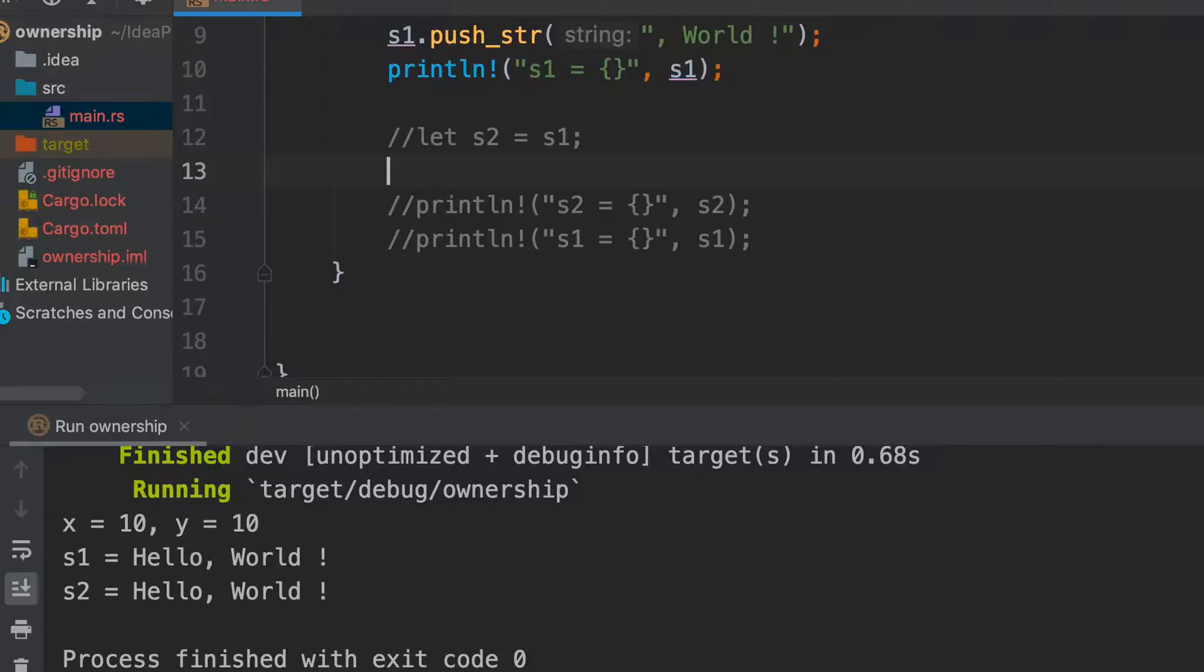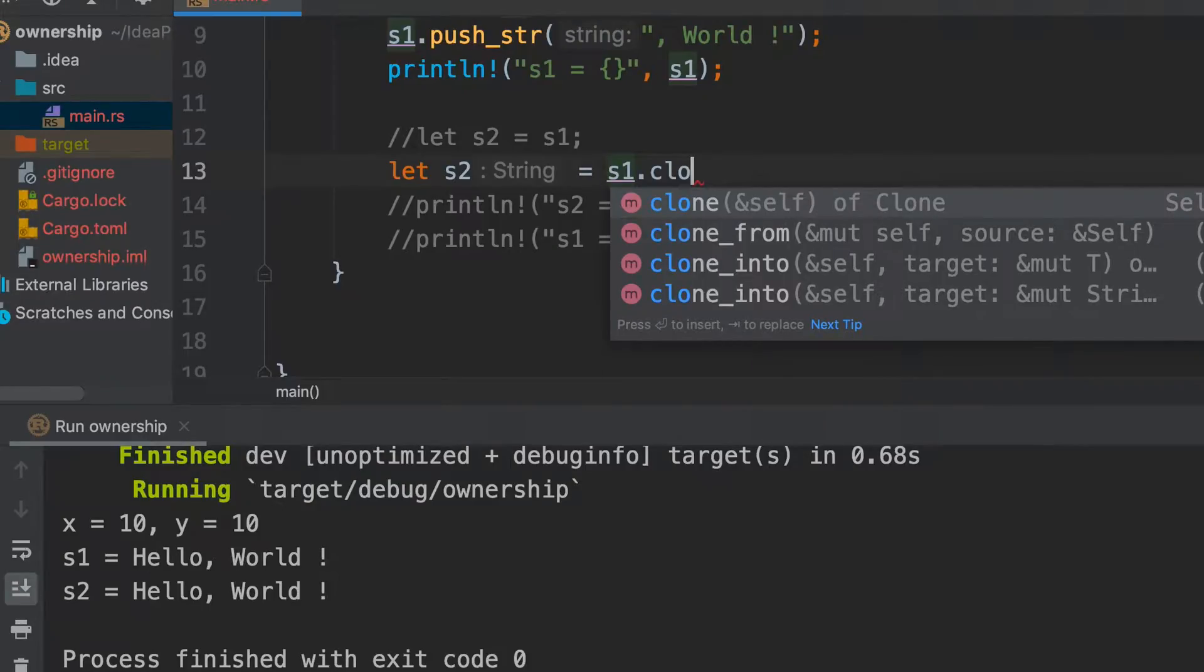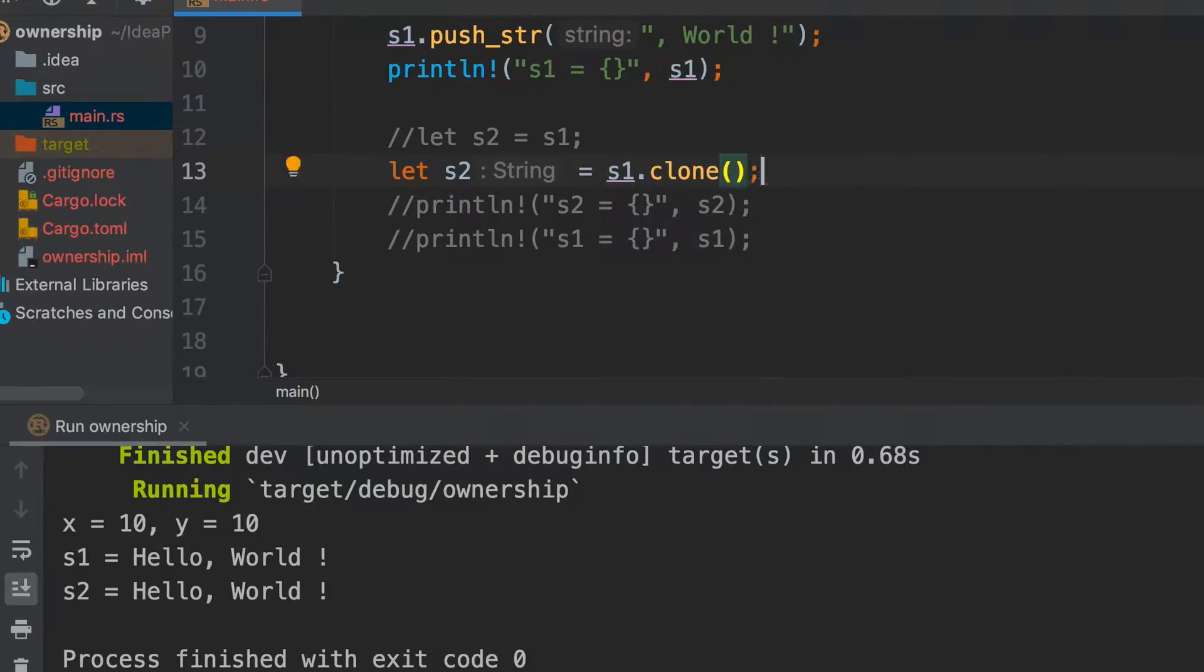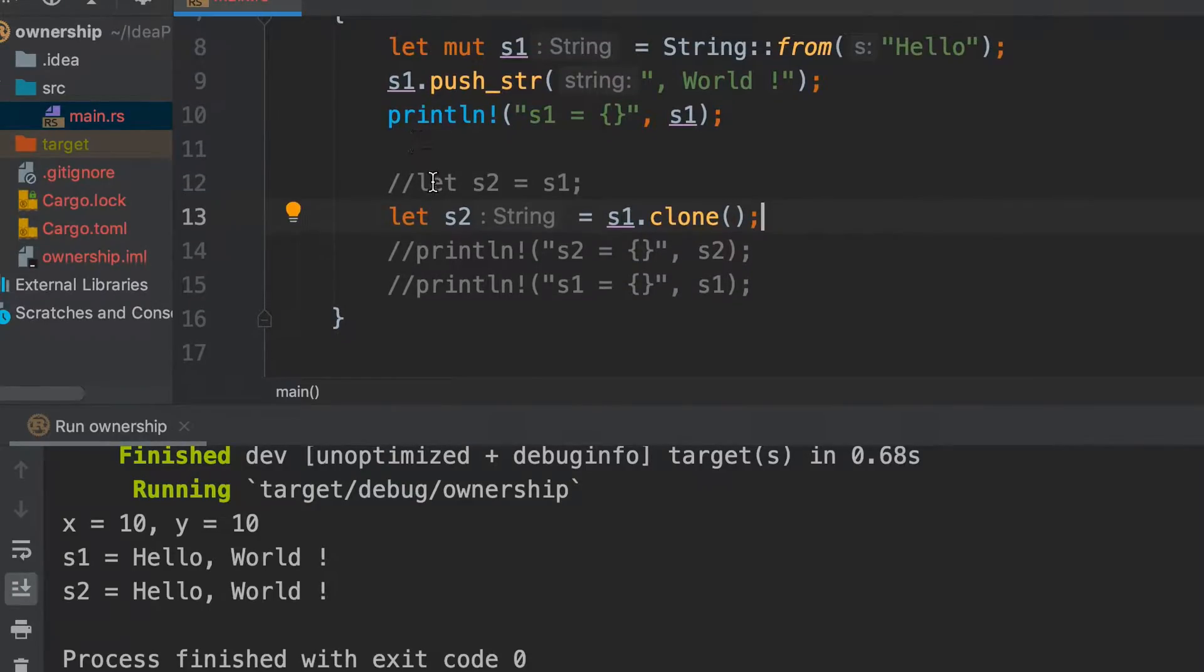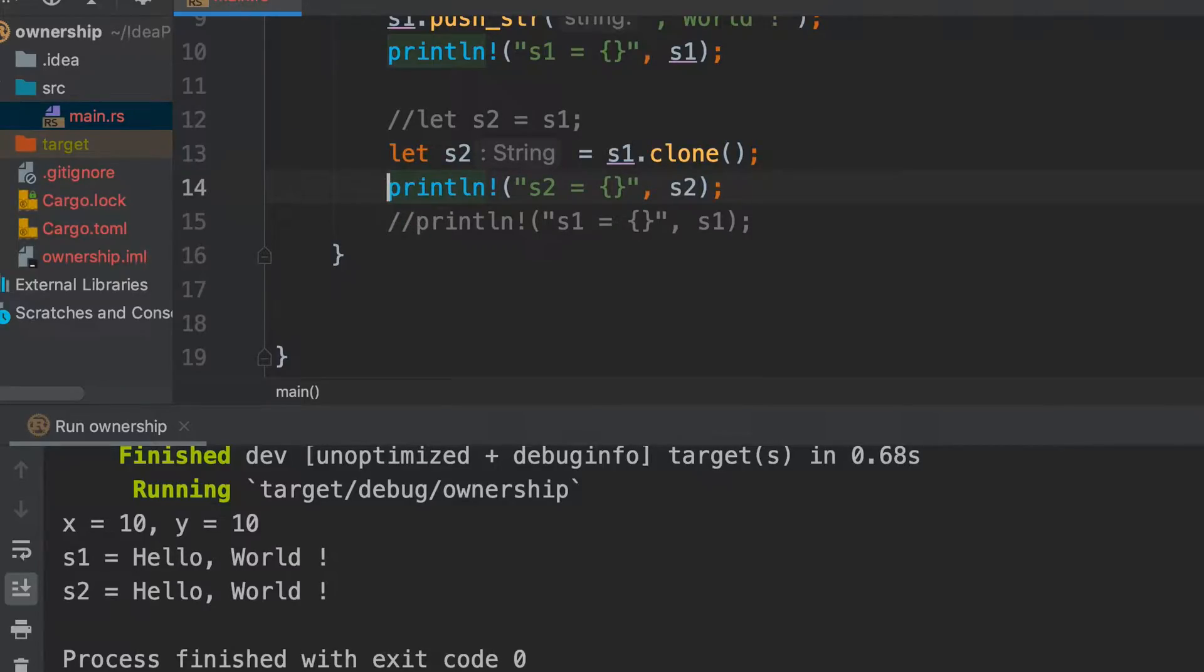Now instead of this, let's do s2 equal to s1 dot clone. And now if we print s2 and let's say we print s1 also.